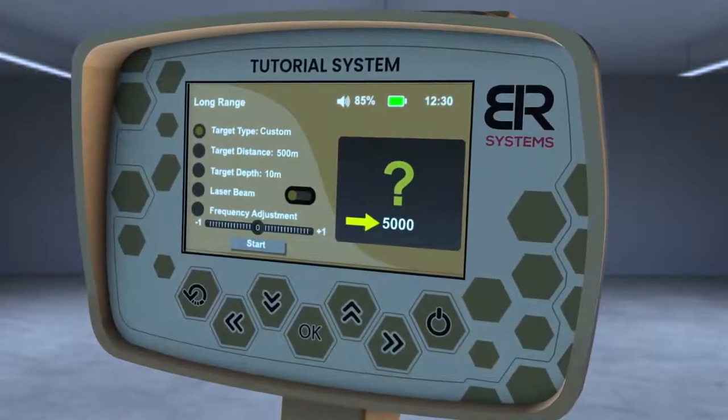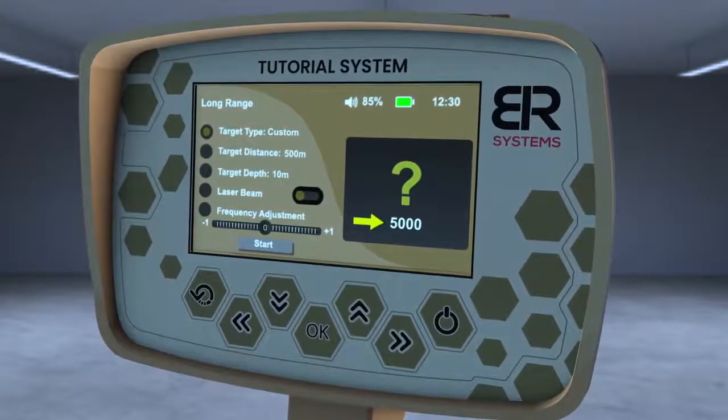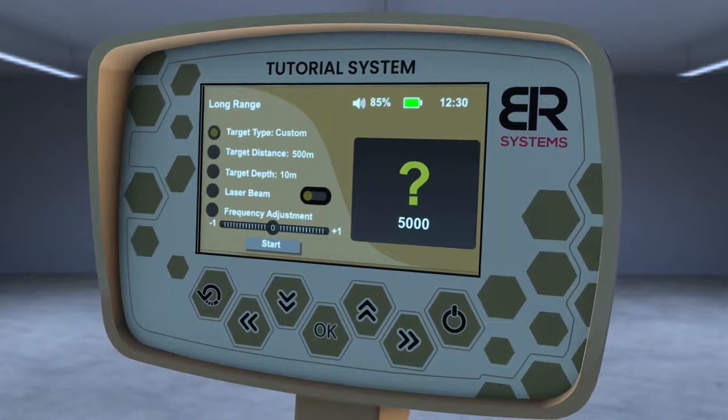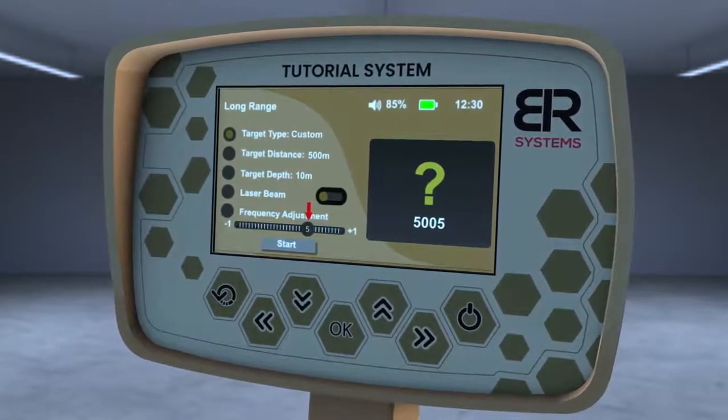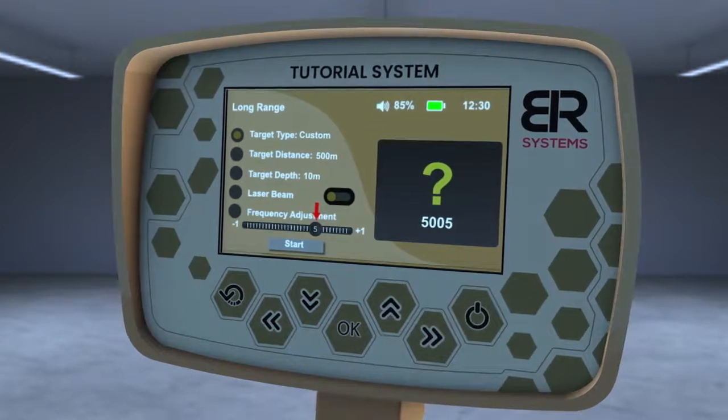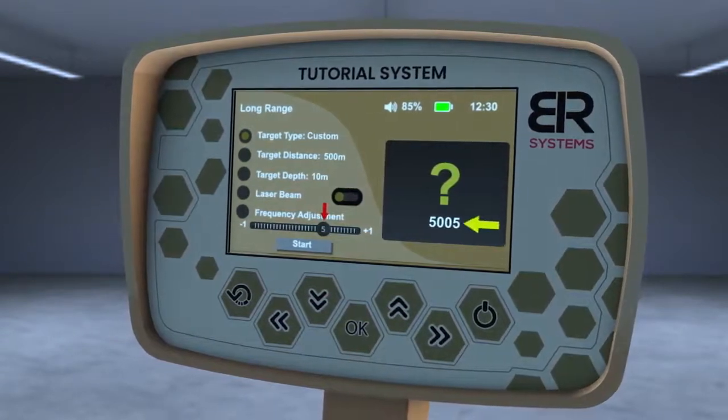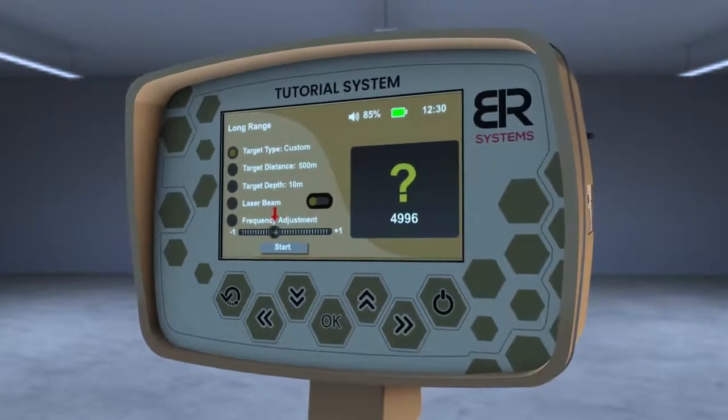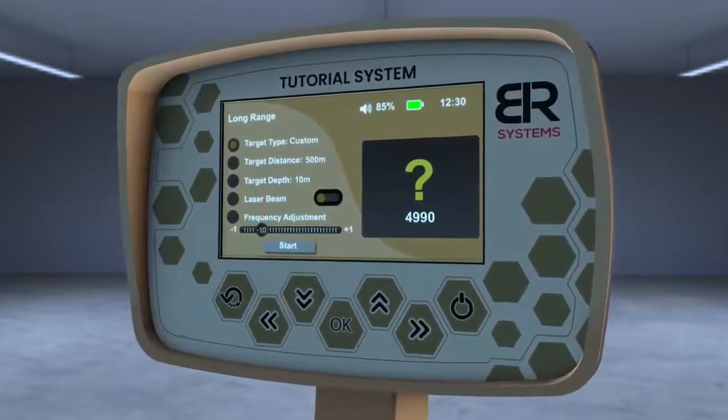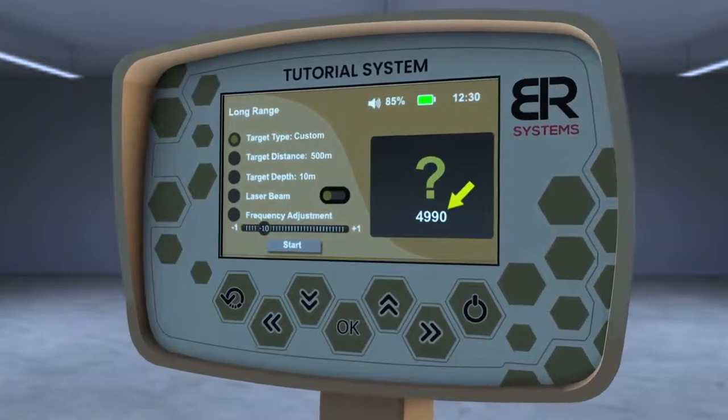For example, the main frequency of gold is 5000 hertz as a default value. If you set it to plus 5, the frequency will only increase by 5 hertz to 5005 hertz. Or if you set it to minus 10, the frequency will drop from 5000 hertz to 4990 hertz.